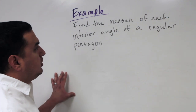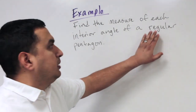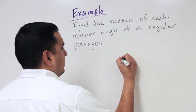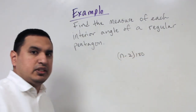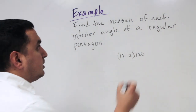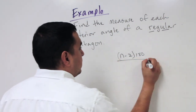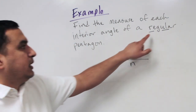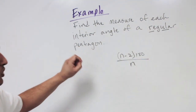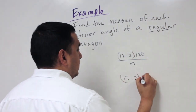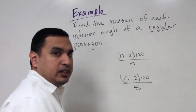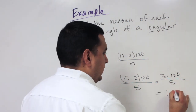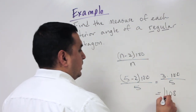Find the measure of each interior angle of a regular pentagon. In any regular polygon, all sides and all angles are equal. Use the formula (n−2) times 180 divided by n. For a pentagon, that's (5−2) times 180 divided by 5, which is 3 times 180 divided by 5, equals 108 degrees. Each interior angle is 108 degrees.